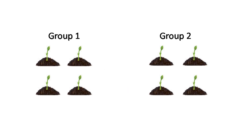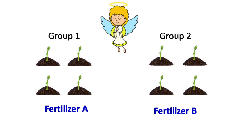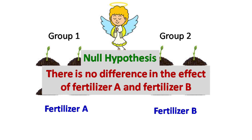Let's take an example where plants are treated with fertilizer A and fertilizer B. The null hypothesis here will be: there is no difference in the effect of fertilizer A and fertilizer B.